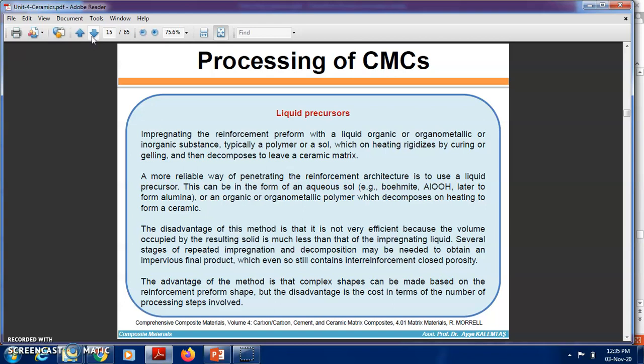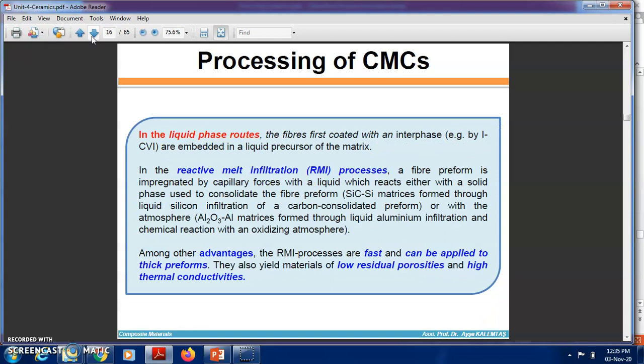In the liquid-based route, the fibers are first coated with an interface and are embedded in the liquid precursor of the matrix or reactive melt. In the liquid infiltration process, the fiber preform is impregnated by capillary forces with a liquid which reacts either with a solid phase used to consolidate the fiber preform, for example silicon carbide to silicon matrix formed through liquid silicon infiltration of carbon solid-consolidated preform, or with the atmosphere.